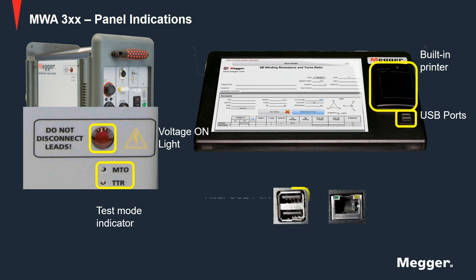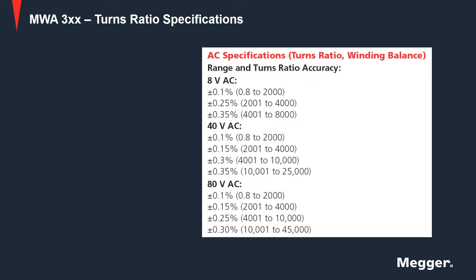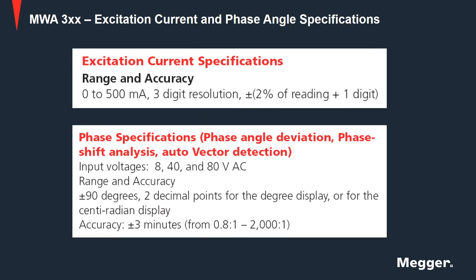Then, you have the rear USB ports used for external Megger instruments such as the Delta 4000 power factor test set or the S1 insulation tester. Finally, you have the rear Ethernet port used to control the instrument with the Delta 4000 power factor test set. Looking at the turns ratio specifications, the MWA has three voltage levels: 8 volts, 40 volts, and 80 volts AC. It can provide excitation current up to 500 milliamps with three-digit resolution, and phase angle of plus or minus 90 degrees to two decimal points with an accuracy of plus or minus three minutes.